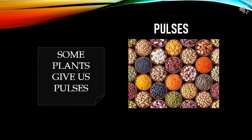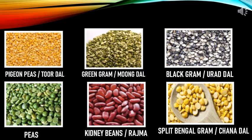Some plants give us pulses also. Here are some examples of pulses. Number one is pigeon peas or toor dal. Number two, green gram or moong dal. Number three, black gram or urad dal. Number four, peas — these are dried peas. Number five, kidney beans or rajma. Number six, split bengal gram or chana dal.